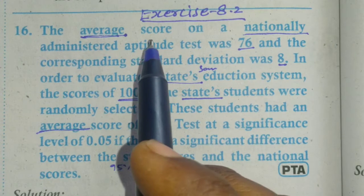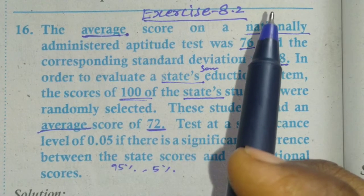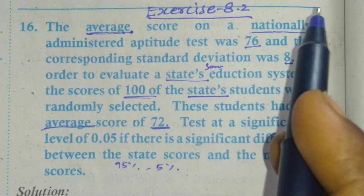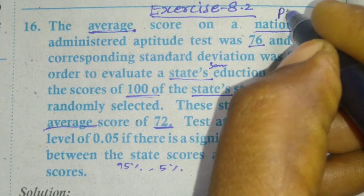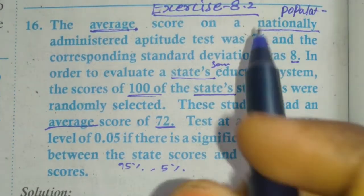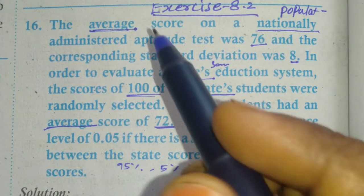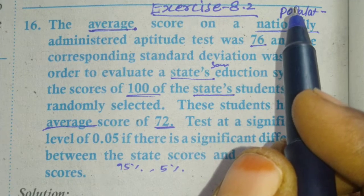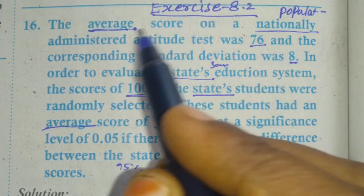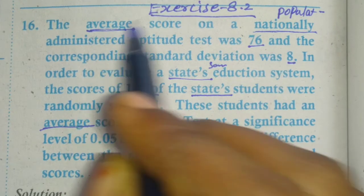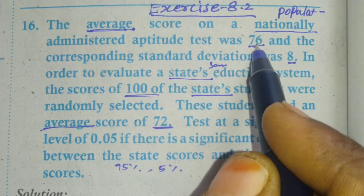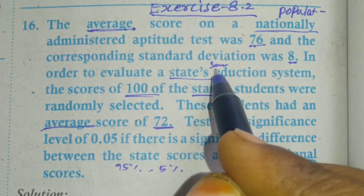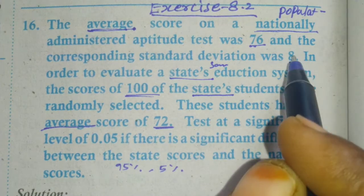So the average score on the National Aptitude Test — that is the population mean value. The population mean, mu, has a value of 76. The population standard deviation, sigma, has a value of 8.